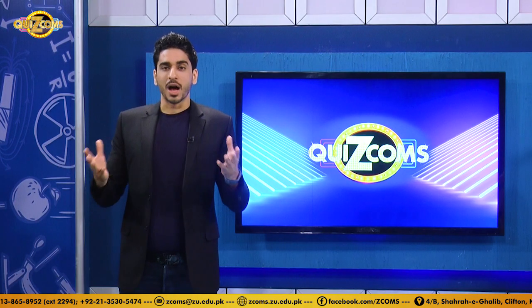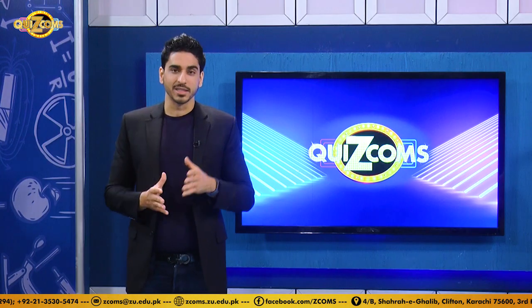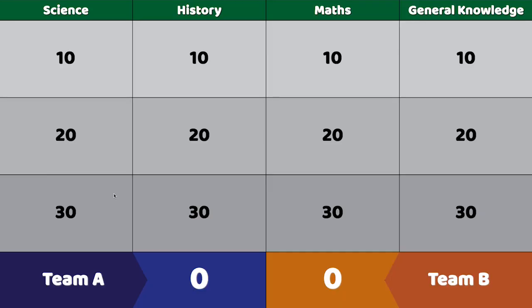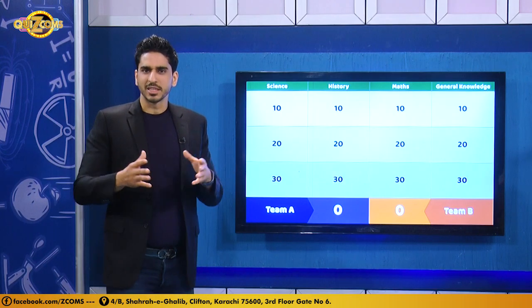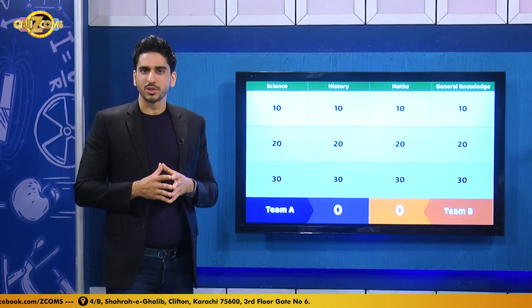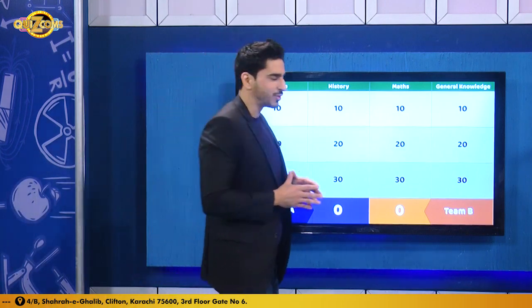Round one is trivia, broken up into four categories: science, history, maths, and general knowledge. Points available are 10, 20, and 30. Let's go over to the spinner to see which school gets to choose first.